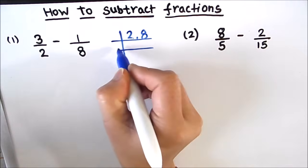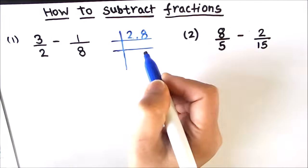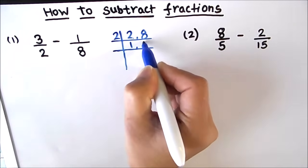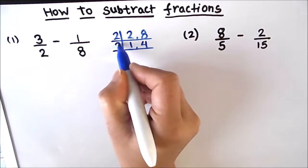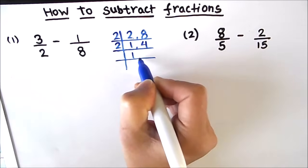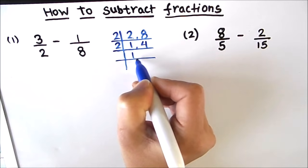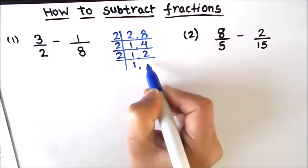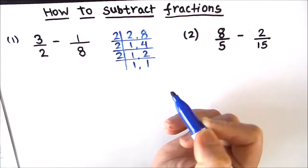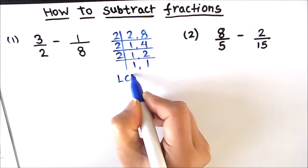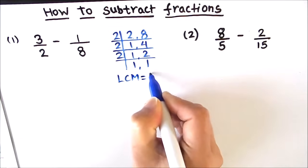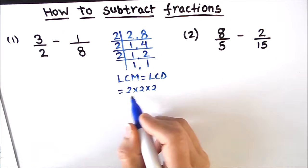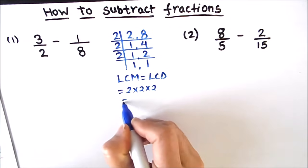So 2 and 8 are both even numbers; we can fully divide both by the first prime number 2. 2 times 1 is 2, and 2 times 4 is 8. Again we use 2 to divide — the first number is fully divided so we write 1, and 2 times 2 is 4. Again we use 2, and now both numbers are fully divided. The LCM, or least common denominator (LCD), is 2 times 2 times 2, which equals 8.